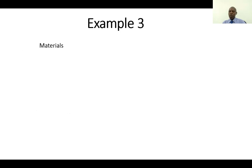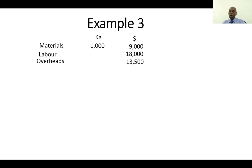First we do our costing statements. We have materials: 1,000 kgs valued at $9,000. Then we have labor costs valued at $18,000. Overheads valued at $13,500. The total cost is $40,500 and the total units is 1,000 kgs.